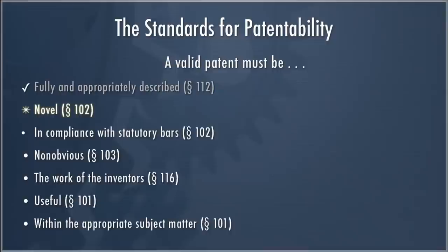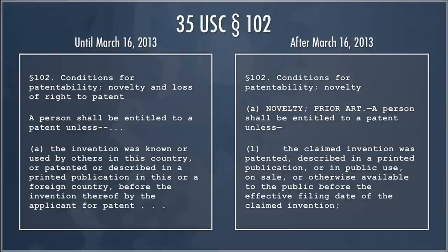Looking at Section 102, we have to consider two different statutes this semester. All patents filed until March 16, 2013 get the 102 on the left side; all patents filed on or after March 16, 2013 get the 102 on the right side. Given that patent terms are 20 years from filing, the old patent law will have application to many patents for at least 20 years. At the same time, within six to eight months after March 16, 2013, we'll start to see patents granted subject to the new 102.